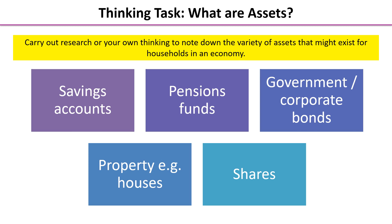OK, so we have got some examples here. Savings accounts — lots of households, but also firms have savings accounts. Pension funds — we start building those as early as we can when we start work, paying money into a fund in the hope that in the future it will pay back and give us an income in our retirement. Government or corporate bonds are forms of assets. It could be property — houses, land, fine wine collections, antique cars or antique items. And it could be shares.